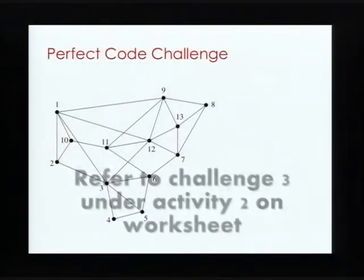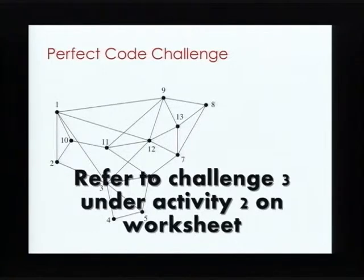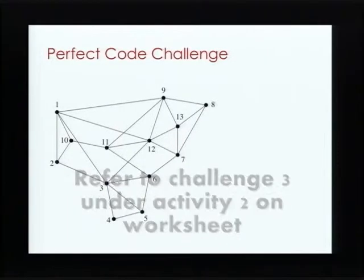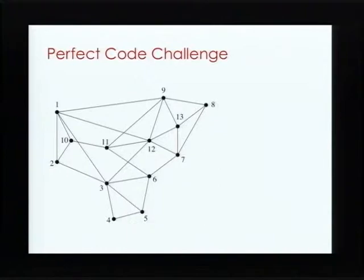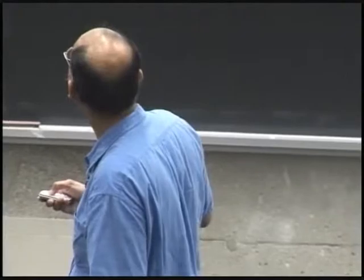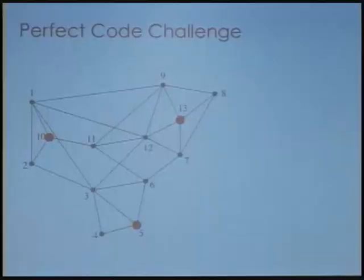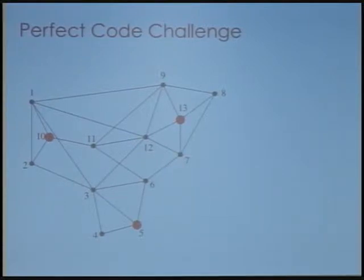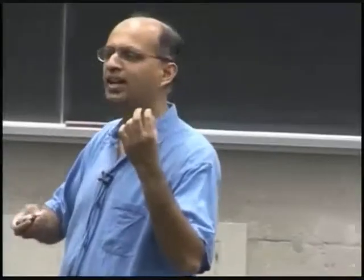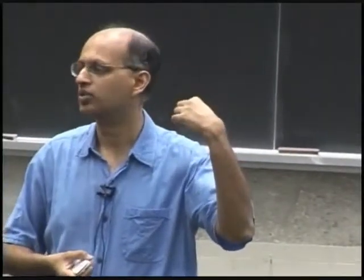Here's another graph, slightly more complicated. Can anyone find a perfect code for this graph? The answer is 5, 10, and 13. So 5, 10, and 13 form a perfect code for the graph because no two of the red vertices are adjacent to each other, while every black node is adjacent to exactly one of the red nodes.